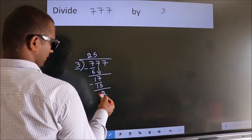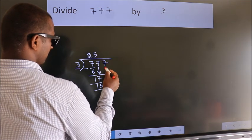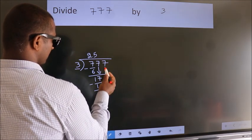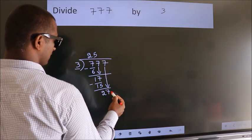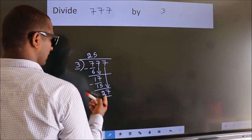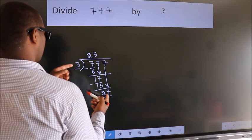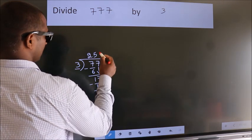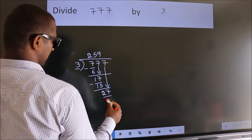We get 2. After this, bring down the beside number. So 7 down. So 27. When do we get 27 in the 3 table? 3 times 9 is 27.